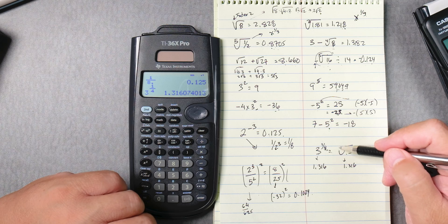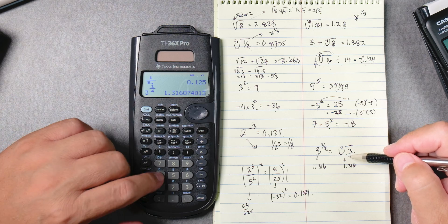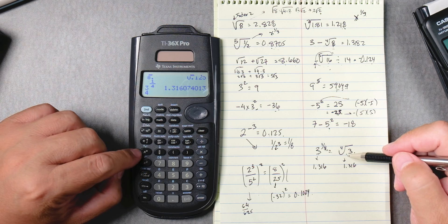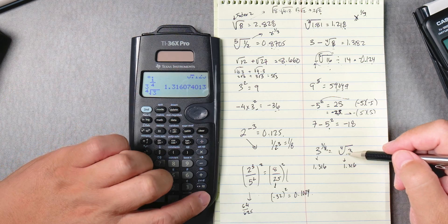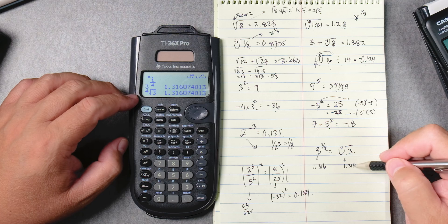And then the 4th root of 3, so we press in 4, second, x to the box, so the 4th root of what? 3, enter, 1.316.